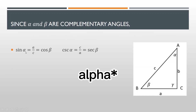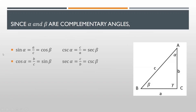Since alpha and beta are complementary angles: sine alpha equals a over c, which is also equal to cosine beta; cosecant alpha equals c over a, which is also equal to secant beta; cosine alpha equals b over c, which is also equal to sine beta; secant alpha equals c over b, which is also equal to cosecant beta; tangent of angle alpha equals a over b, which is equal to cotangent beta; and cotangent alpha equals b over a, which is equal to tangent beta. This is just a summary of the two previous slides.